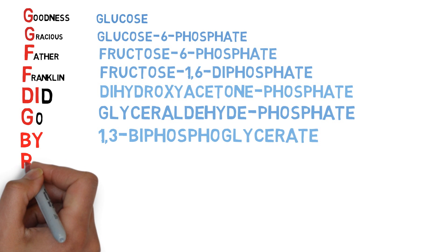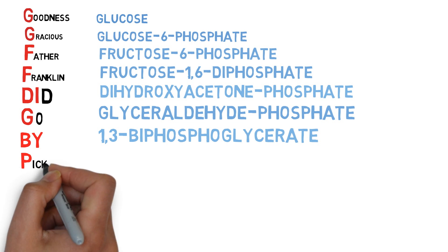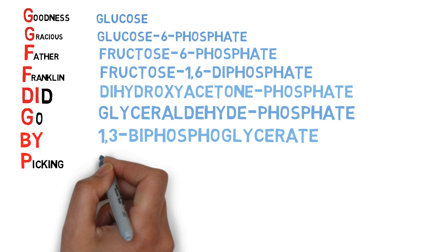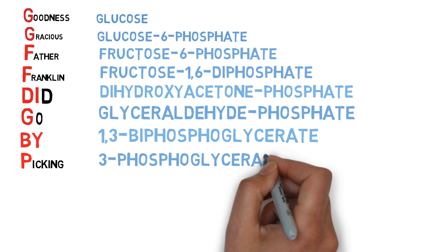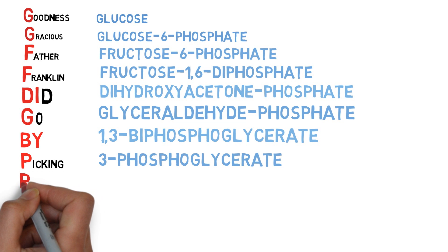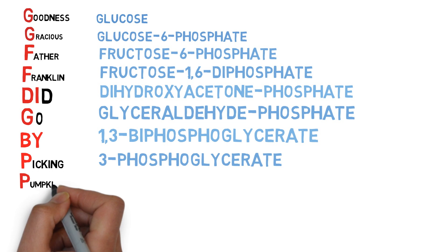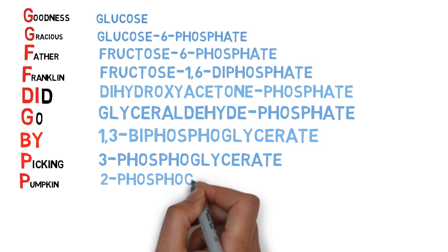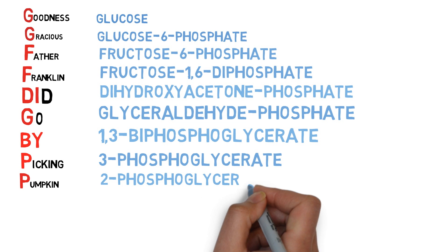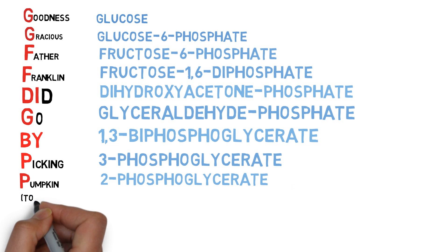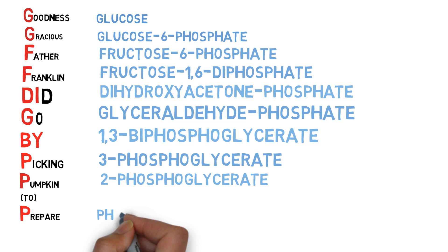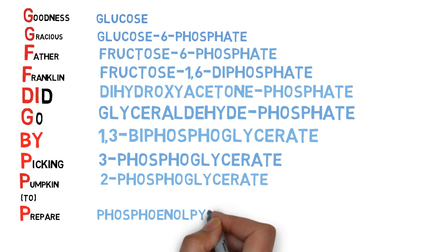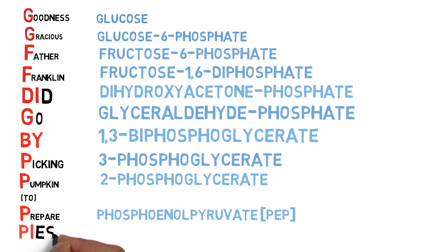P of picking is for 3-phosphoglycerate. P of pumpkin is for 2-phosphoglycerate. P of prepare is for phosphoenol pyruvate. P of pies is for pyruvate.